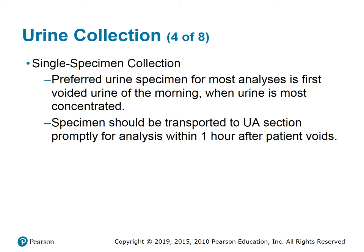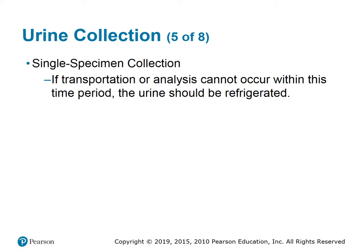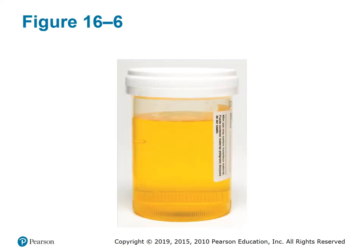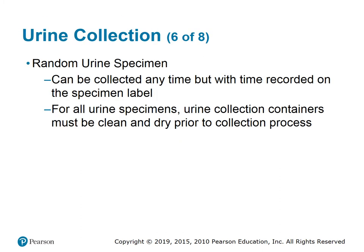A single specimen collection is the preferred urine specimen for most analysis — the first voided urine of the morning when urine is most concentrated. Specimens should be transported to the urinalysis section promptly for analysis within one hour after the patient voids. If transportation or analysis cannot occur within this time period, the urine should be refrigerated. Random urine specimens can be collected at any time, but with time recorded on the specimen label. All urine collection containers must be clean and dry prior to the collection process.